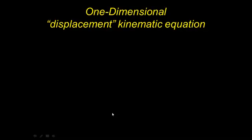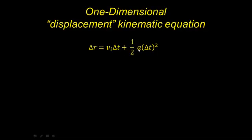In this video we're going to talk about the one-dimensional displacement kinematic equation. The equation says that the displacement of an object — the distance the object travels and the direction it travels — equals the initial velocity times the time, plus one-half the rate at which the object's velocity is changing times the square of the time during which it's traveling.